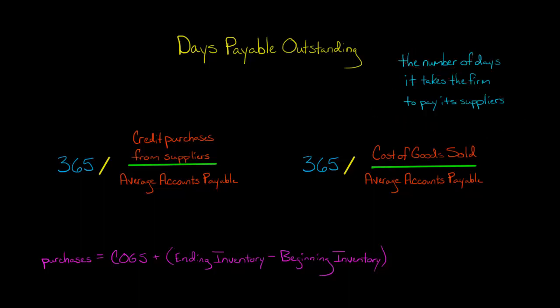It's the number of days it takes a company to pay off its suppliers. So a company like Walmart has a large number of suppliers, and they don't pay cash for all of their purchases. Most of the time, they pay on credit. And we might want to know how many days is it taking Walmart to pay off its suppliers?